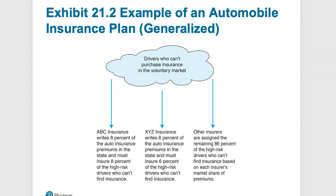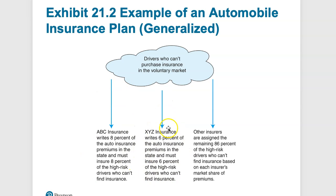Here's how the pool works: if ABC group writes 8% of the auto insurance premiums in the state, they have to pick up 8% of the high-risk drivers. The size of your insurance portfolio dictates the percentage of high-risk drivers you must extend policies to. This way, everyone who needs high-risk insurance will have a marketplace to buy it.